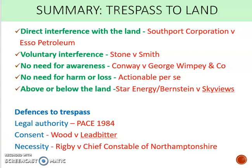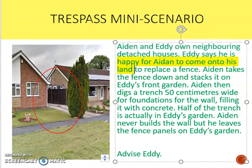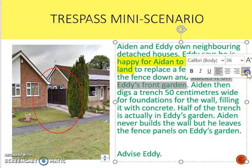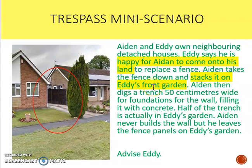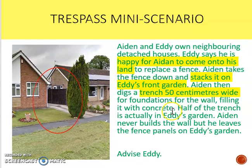Now let's look at the issues for Aiden and Eddie. Going through the scenario: Eddie says he's happy for Aiden to come onto his land — that immediately stands out as the defense of consent. Aiden takes the fence down and stacks it on Eddie's front garden — there was no permission given for that, so stacking it on the front garden could be a trespass. Aiden then digs a trench 50 centimeters wide, which suggests trespass below the ground, and half of that trench is in Eddie's garden. Aiden never builds the wall but leaves the fence panels on Eddie's garden.